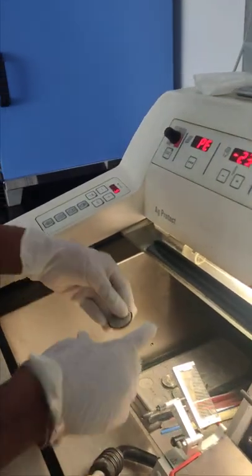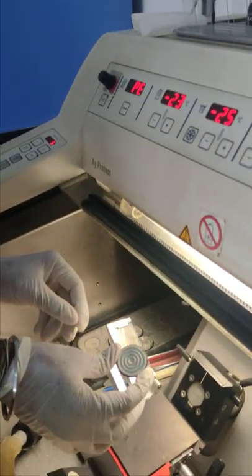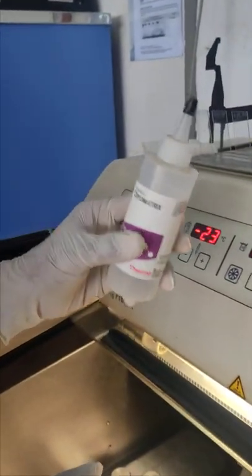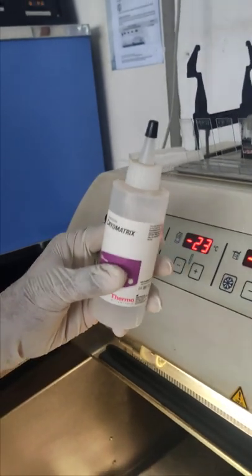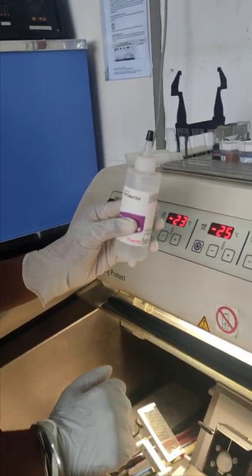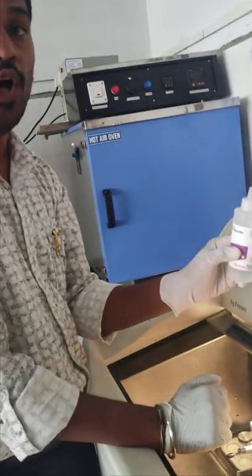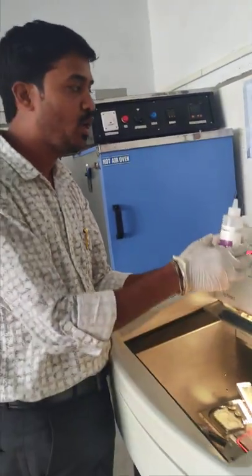To place tissue, we use what we call a check holder or metallic holder. The gel we use for making the frozen block is called cryomatrix gel, also known as OCT solution, which stands for optimum temperature control solution.